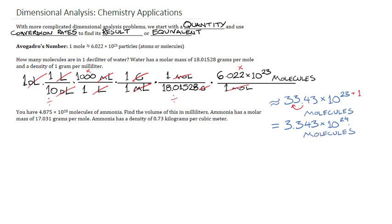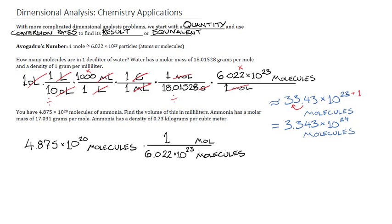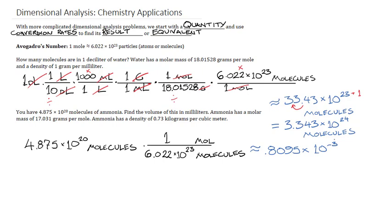We can do the same thing with ammonia. Here I'm going to start with a number of molecules and convert this into milliliters to find how much volume that is. When you start with scientific notation, get it out of the way as soon as possible. I'm going to take 4.875 and divide by 6.022, which gives approximately 0.8095. Then handle the powers of 10: with 20 on top and 23 on the bottom, subtract to get 10 to the negative third power. Converting to standard notation by moving the decimal three places gives 0.0008095 moles — a very tiny chunk of a mole.